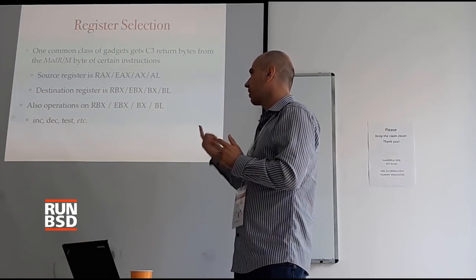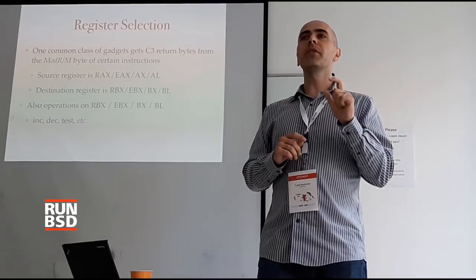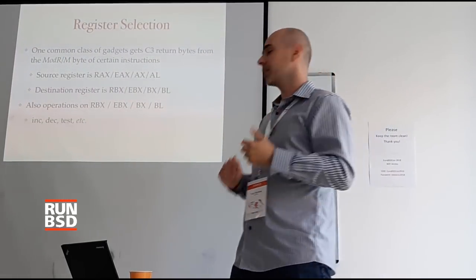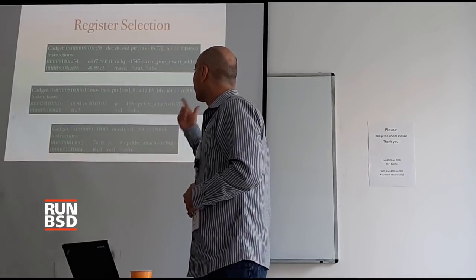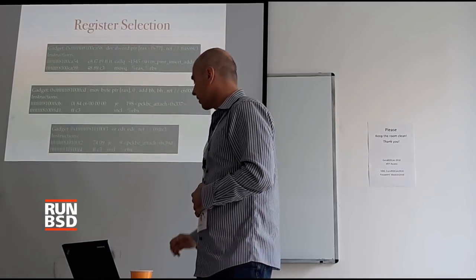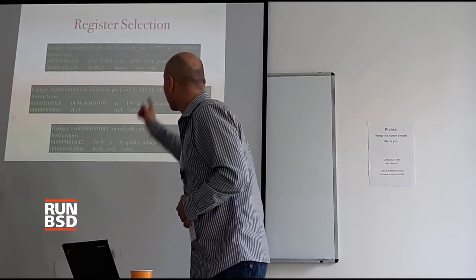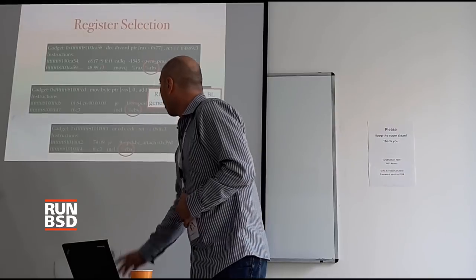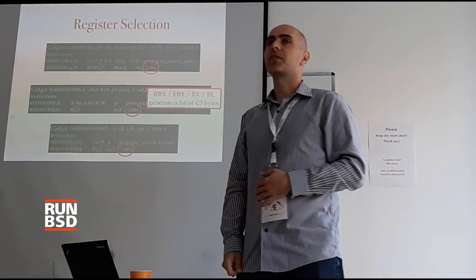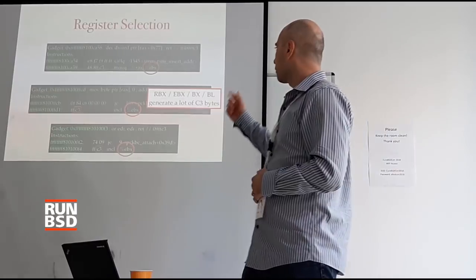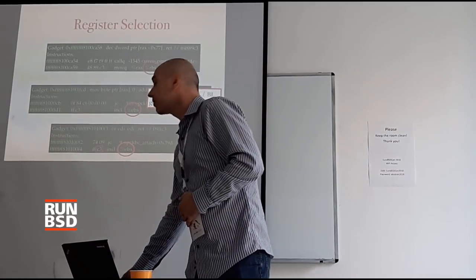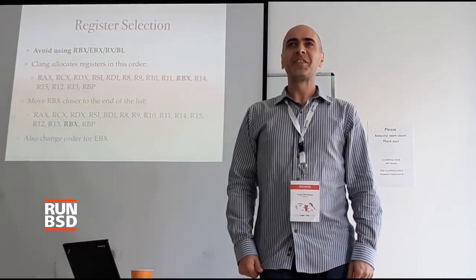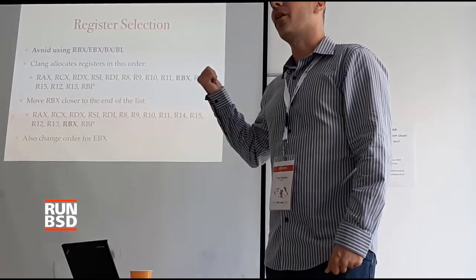I'm going to focus on other instruction opcodes. There are also operations on BX registers — increment, decrement. The B register series is really a source of many C3 bytes and therefore many gadgets. You can see there are lots of gadgets here — one manipulating a pointer, one doing an add, an 'or' that's kind of useful. All of them are manipulating the BX register series. Using the B registers generates lots of C3 bytes.